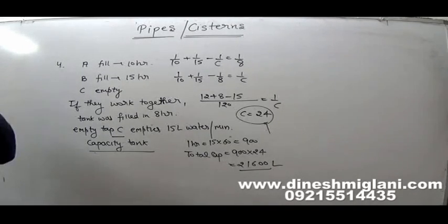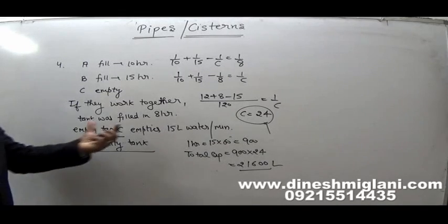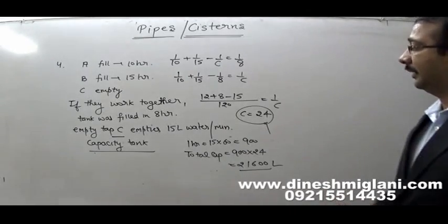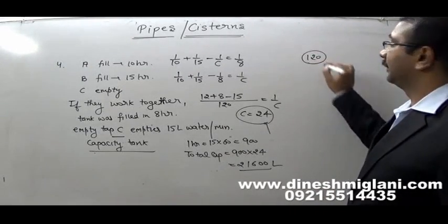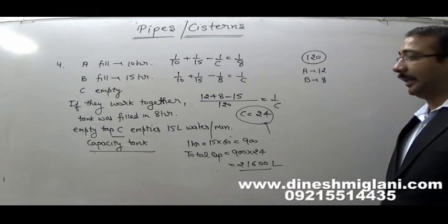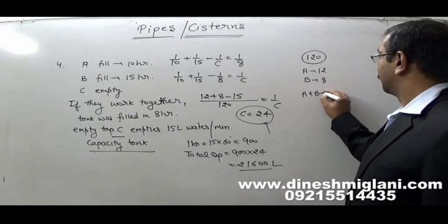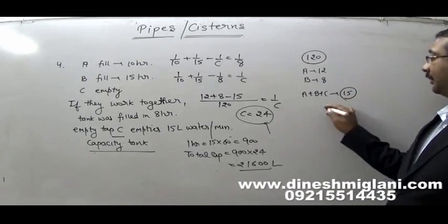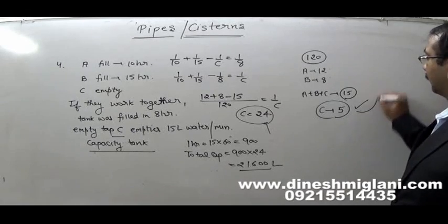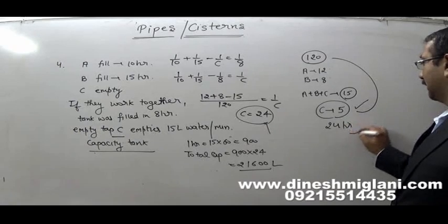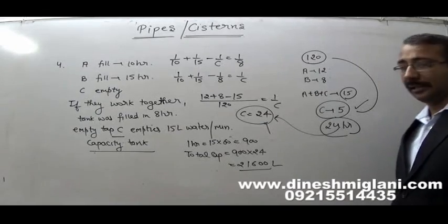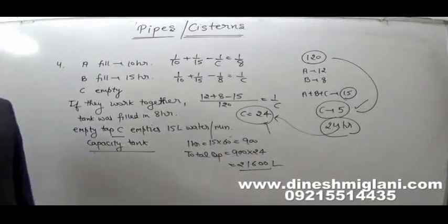The questions are simple. The key is finding how much time C takes to empty the tank. A second approach: take LCM of 10, 15, and 8 as 120. A fills 12 per hour, B fills 8. Together in 8 hours they fill the 120-unit tank, meaning A+B+C together fill 15 per hour. So C empties 12 + 8 − 15 = 5 units per hour, and 120/5 = 24 hours for C. Then multiply: 900 × 24 = 21,600 liters.